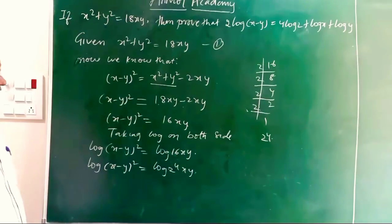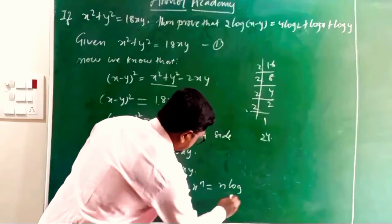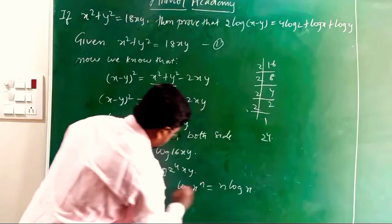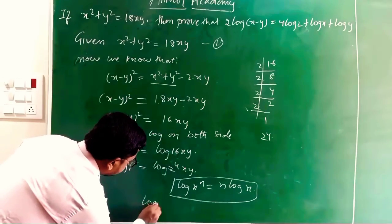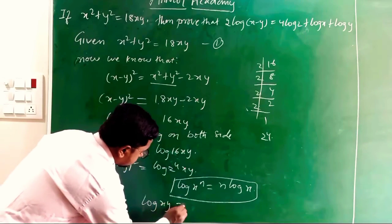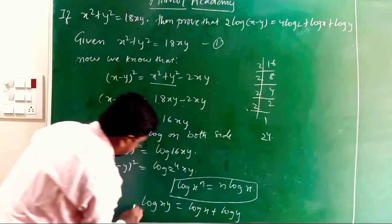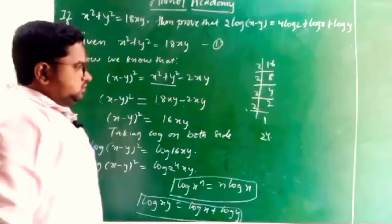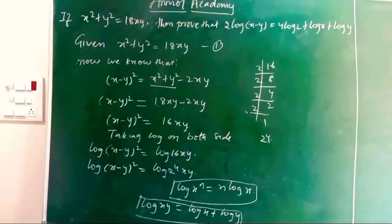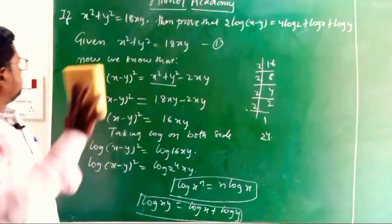From logarithm formulas: log xⁿ = n log x, and log xy = log x + log y. These two formulas I am using here to solve this equation.